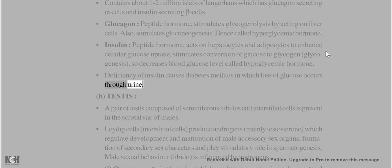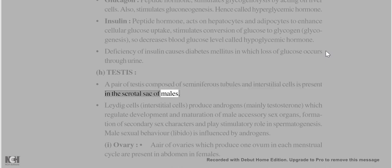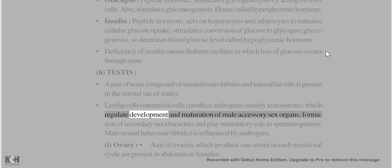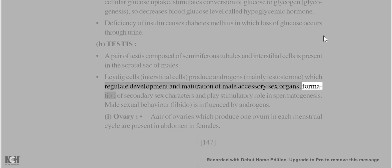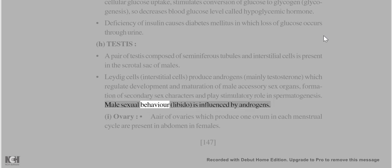In diabetes mellitus, loss of glucose occurs through urine. Testis: A pair of testes composed of seminiferous tubules and interstitial cells (Leydig cells) is present in the scrotal sac of males. Interstitial cells produce androgens, mainly testosterone, which regulate development and maturation of male accessory sex organs, formation of secondary sex characters, and play a stimulatory role in spermatogenesis. Male sexual behavior (libido) is influenced by androgens.